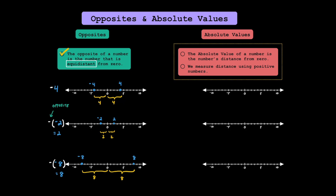Let's look at absolute values now. The absolute value of a number is the number's distance from zero. Since absolute value is defined as a distance, it's always going to be positive. We only measure distance using positive numbers. Even if you were to go backwards, you'd be going backwards a certain distance — it wouldn't be a negative distance. While negative signs represent opposite, we use these long absolute value bars on the sides of the number to represent absolute value.